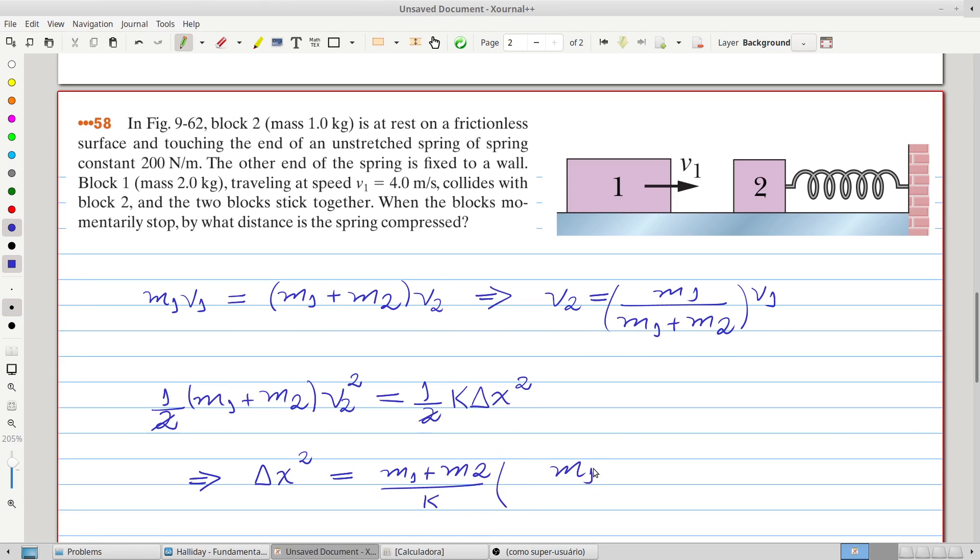M1 squared, divided by M1 plus M2 squared, and V1 also squared.